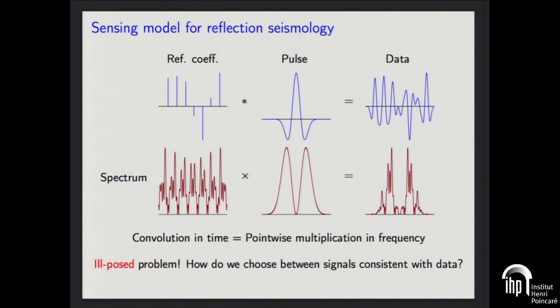If we look at the problem in the frequency domain and forget about sampling for a moment: we have reflection coefficients that get convolved by the pulse, and that's the data. Convolution is point-wise multiplication in frequency. If you look at the spectrum of the Ricker wavelet, it turns out it's zero beyond a certain frequency and also zero at the origin. So we're losing frequency information in a really large band, and you could fill this in almost arbitrarily — the problem is obviously hopeless in general.